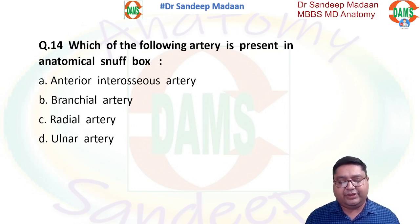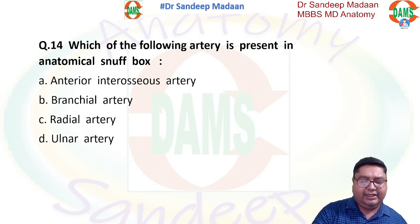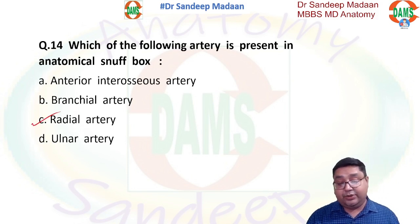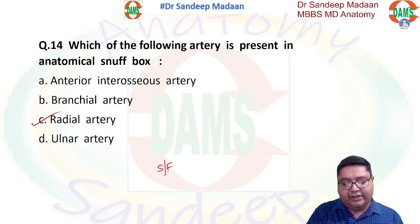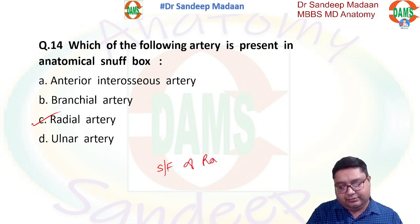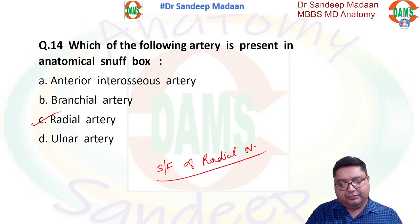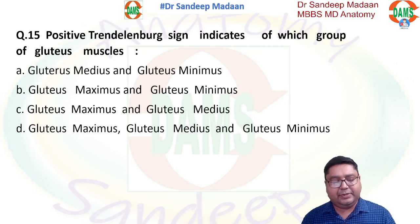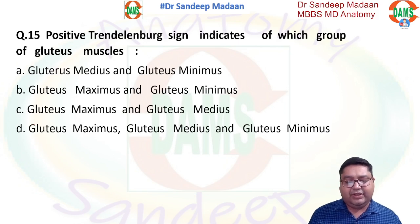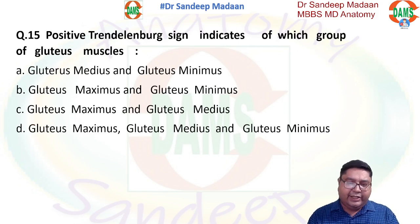The anatomical snuff box is an important area frequently examined. The key content is the radial artery. They can also ask: if the nerve in the roof of the snuff box is compressed, what happens? The superficial branch of the radial nerve would be affected, resulting in a condition called meralgia paresthetica — or in this context, sensory loss over the dorsum of the hand.